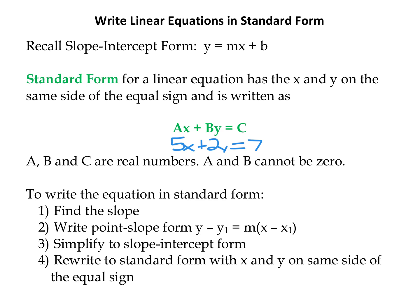So we find the slope, then we write point-slope form, and then we're going to simplify that to slope-intercept form, where we distribute the m into the parentheses and add or subtract to get y by itself. And then one more step: we're going to move the x to the left side, rewriting in standard form with x and y on the same side of the equal sign.